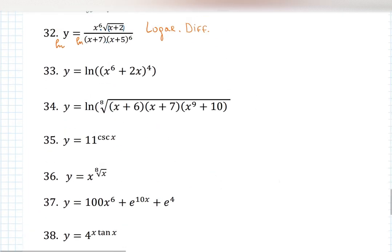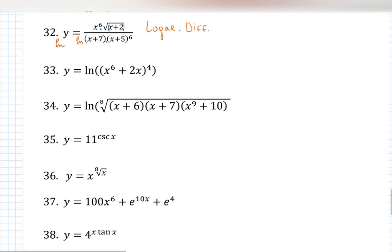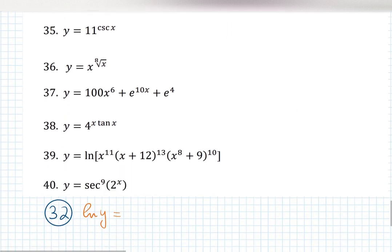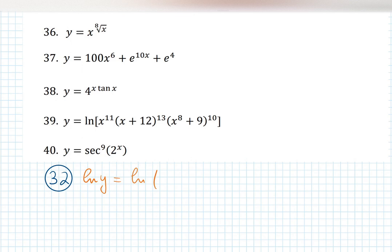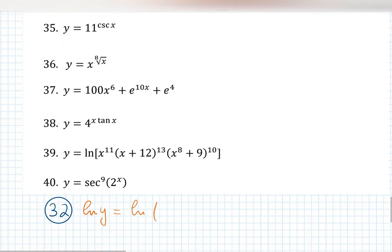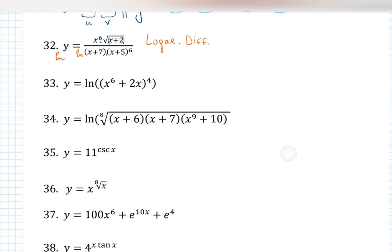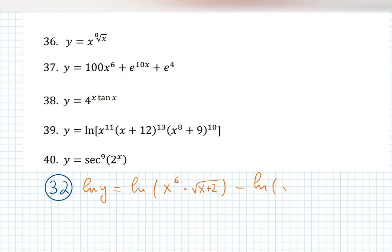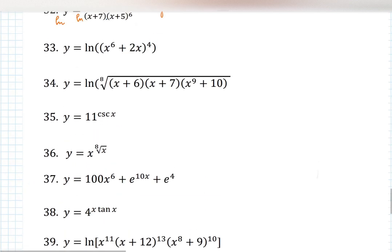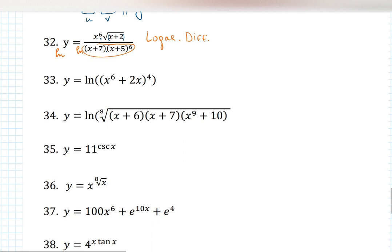With logarithmic differentiation, applying a natural log to both sides gives us ln(y) on the left-hand side, and ln of the complex fraction on the right. Using properties of natural log we'll simplify that fraction. Natural log of y equals — and I start simplifying right away — the natural log of a quotient gives you natural log minus natural log, so we'll have natural log of x to the 6 times square root of x plus 2, minus natural log of x plus 7 times x plus 5 to the 6. That's log of the top minus log of the bottom.